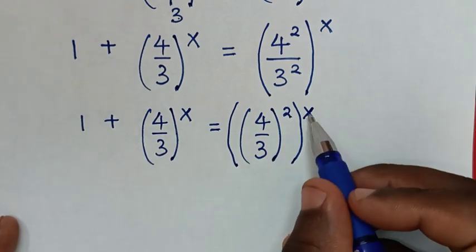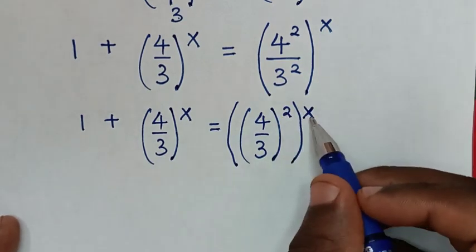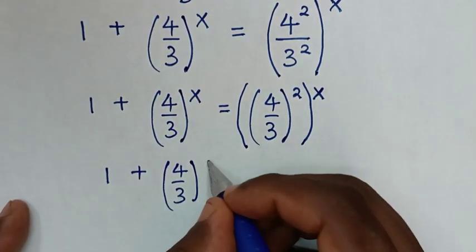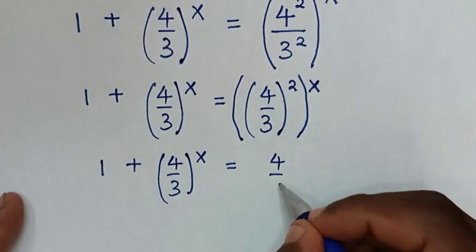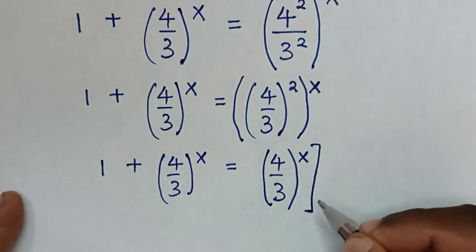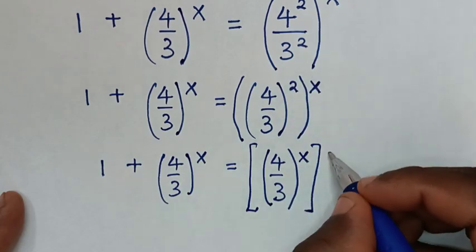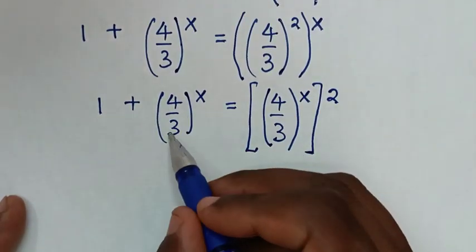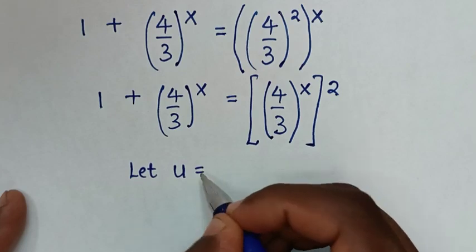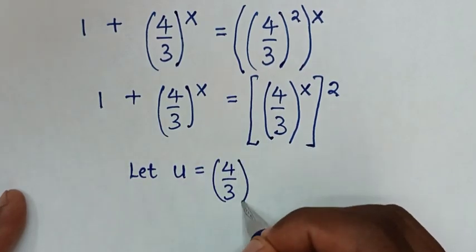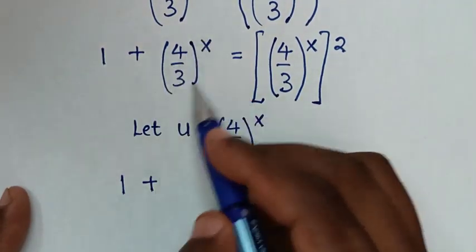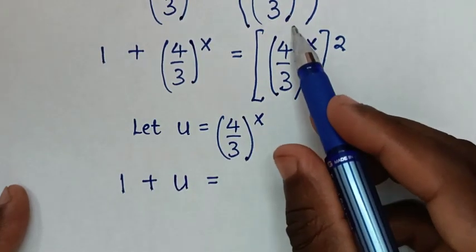So it will be 1 plus 4 over 3, bracket, power of x, is equal to 4 over 3, bracket, power of x, then bracket power of 2 outside. Now 4 over 3 bracket power of x is common, so we will let u equal to 4 over 3 bracket power of x, so it will be 1 plus u is equal to u squared.